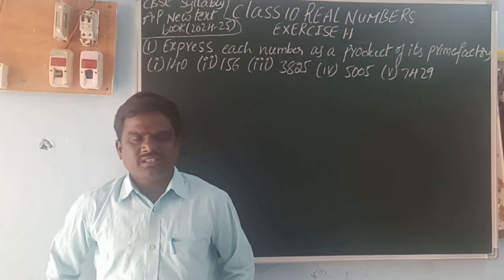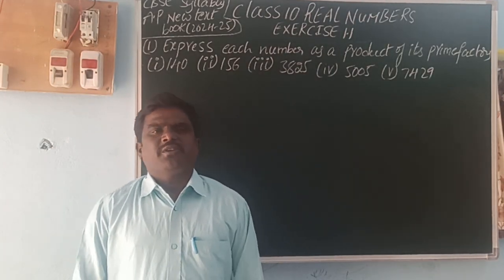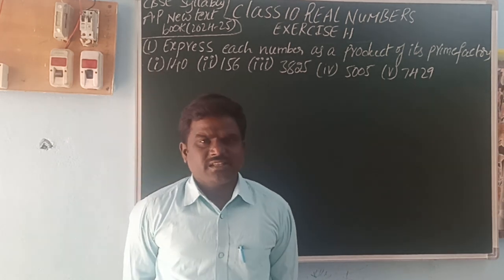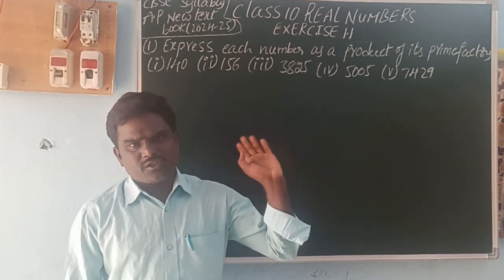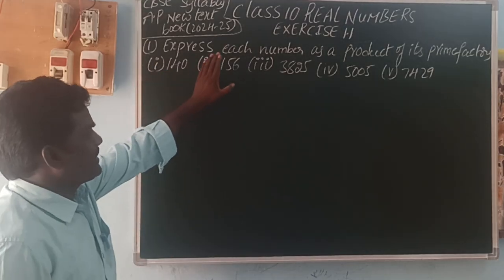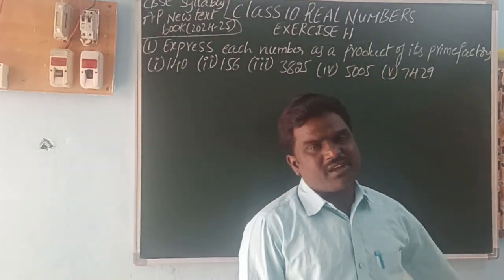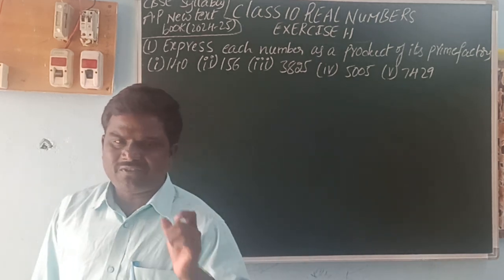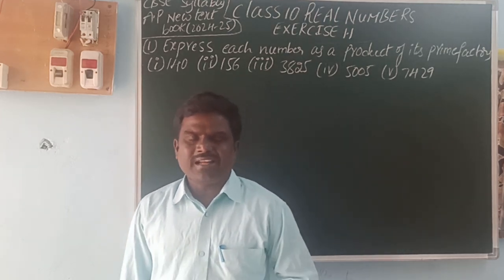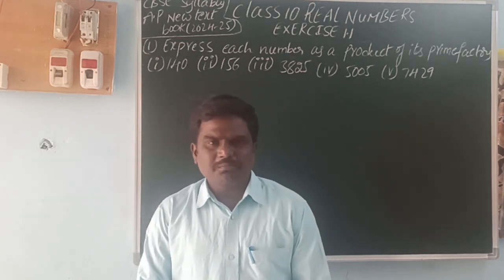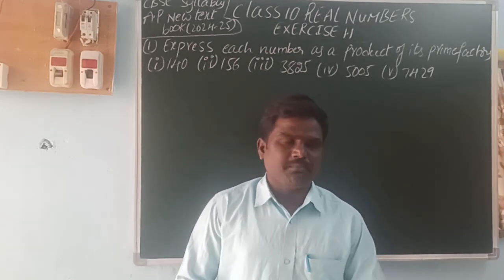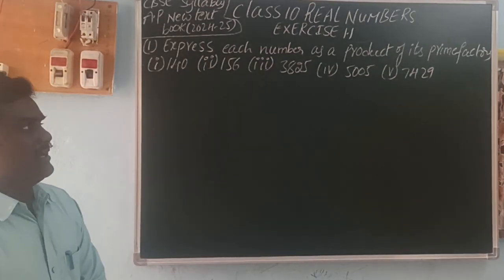Hi, welcome back to our YouTube channel. This is Balakrishna. In this video I am going to explain Class 10 Real Numbers. This is a series recently started in AP for 2024-25. Exercise 1.1: first of all, express each number as a product of its prime factors. Prime factors means the factors of the number are prime numbers. A prime number is a number having only two factors: one and itself.